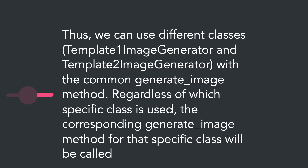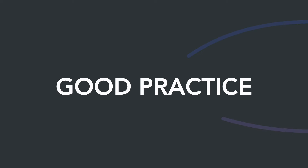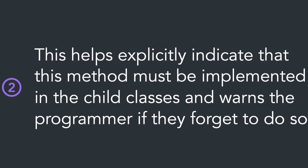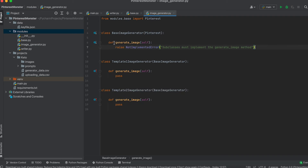The corresponding generateImage method for that specific class will be called. A good practice is to raise a NotImplementedError in the base class for a method that should be overridden in child classes. This explicitly indicates that this method must be implemented in the child classes and warns the programmer if they forget to do so. If the method is not implemented in the child class, the interpreter will find it in the base class and raise the exception.